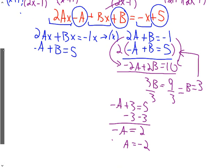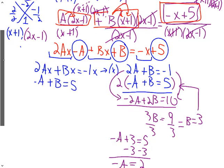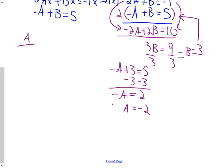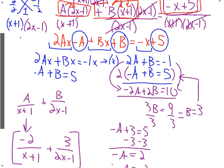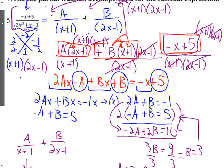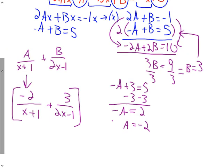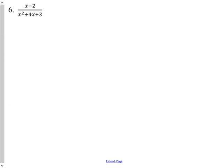Going back to the top: A was over x plus 1, so instead of A over x plus 1, we write negative 2 over x plus 1 plus 3 over 2x minus 1. If you add these together, you get our original negative x plus 5 over 2x squared plus x minus 1. That is the answer to our partial fraction decomposition. Now, as with most mathematical things, there are situations that are not as straightforward as that.